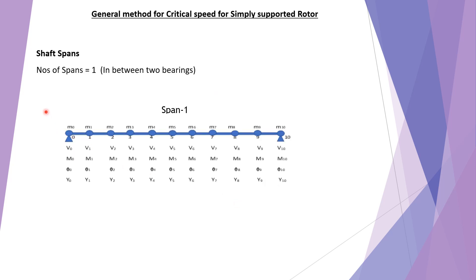Now let us understand some terminology, such as a span. A span refers to how many spans are possible in a particular type of rotor. In a simply supported rotor, bearing one and bearing two are present, so there will be only one span. In the overhang type it can be two, and in both-side overhang it can be three. For the simply supported rotor without any overhang, there is only one span between the bearings.